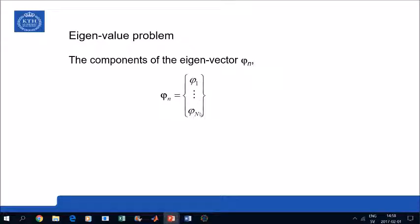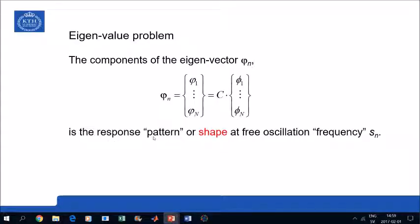With, of course, N components here, if we have capital N degrees of freedom in the system. And one property of this solution vector here is that it's not fully determined. It is actually, you can normalize it with an independently, with an arbitrary chosen scaling factor. So that means that this vector is only a shape vector that tells you the response pattern at this free vibration oscillation frequency. So when the system vibrates at the free oscillation frequency, then it shows a response pattern or shape given by this shape vector, the eigenvector.